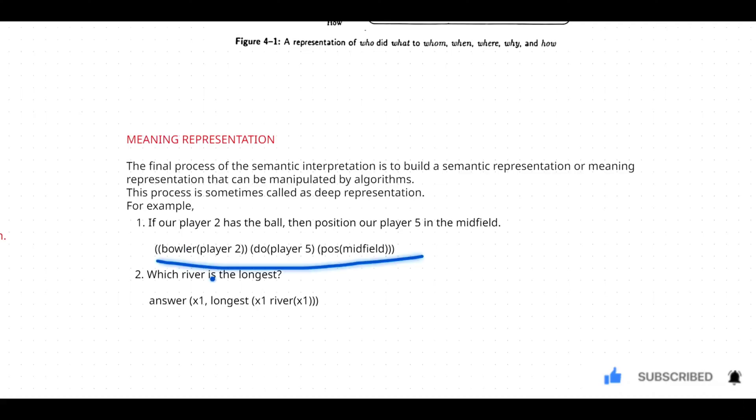If player 2 has the ball, what does it mean? He is a bowler. So if player 2 is bowler, then you have to place player 5 in the position that is midfield position. I think you got a clear understanding.